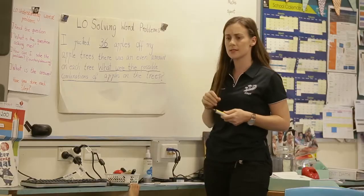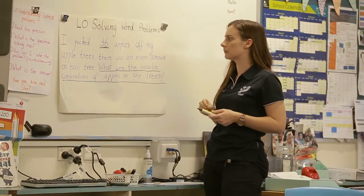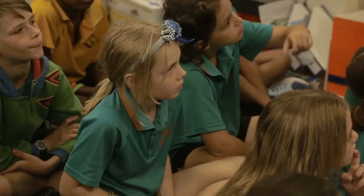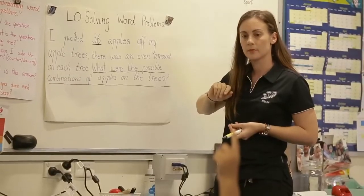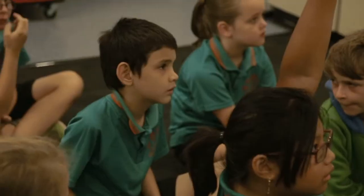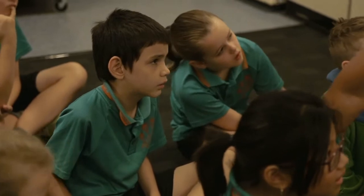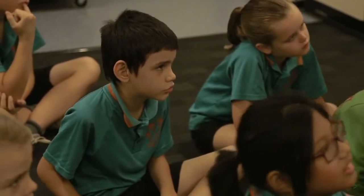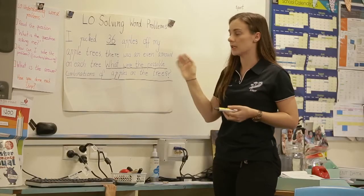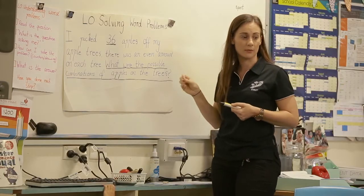So I picked 36 apples. I know 36 is a key part of my problem. What is my next important part, Jason? There was an even amount on each tree. Do we agree? Is that an important piece of information there?